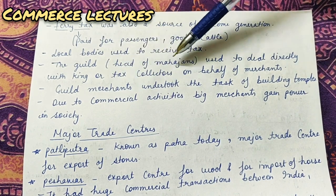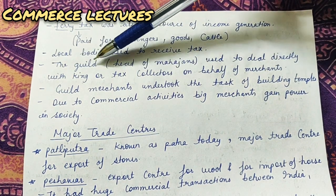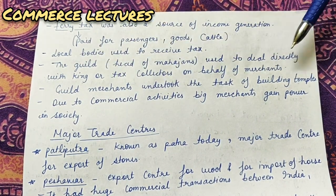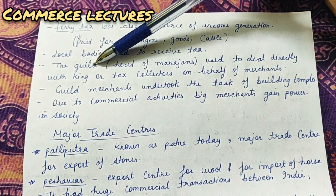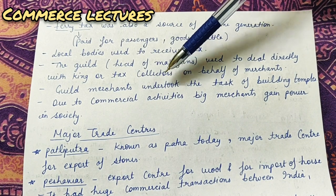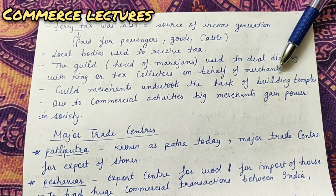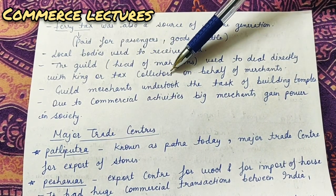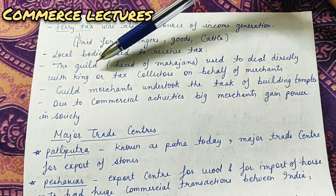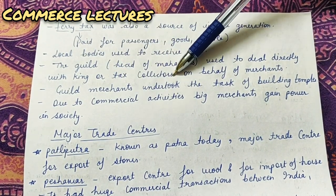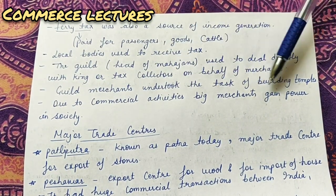There was a head of mahajans - mahajans existed at that time, and the head of those mahajans was called the guild. These guild people used to deal directly with the king or with the tax collector. Not every individual merchant would go to the king or tax collector. If any merchant had a problem, they would tell the guild, and the guild would go and speak on their behalf with the king or tax collector.